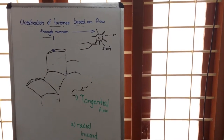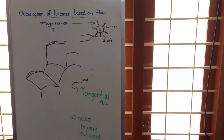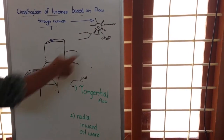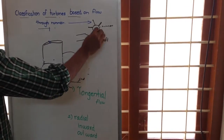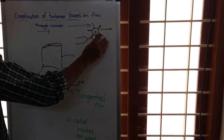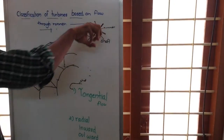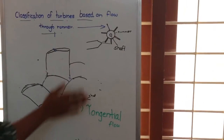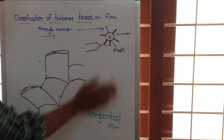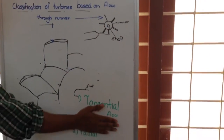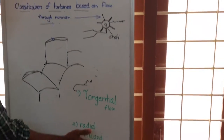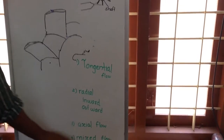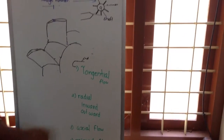Now we are here to classify the turbines based on flow or volume for the runner. We are having the runner here and the blades are attached to the runner. We are having a shaft. Mainly, the turbines are classified as tangential flow turbine, radial flow turbine, axial flow turbine, and mixed flow turbine.